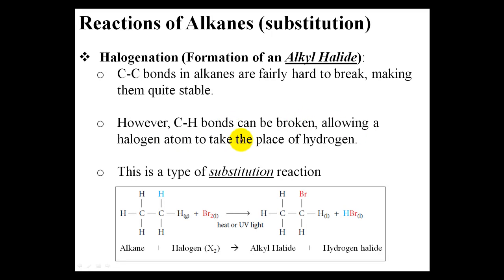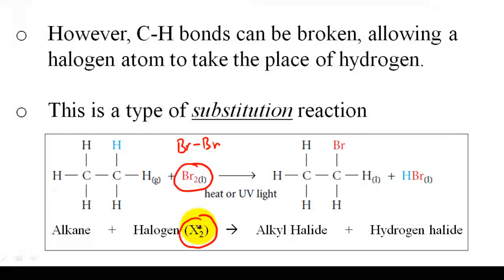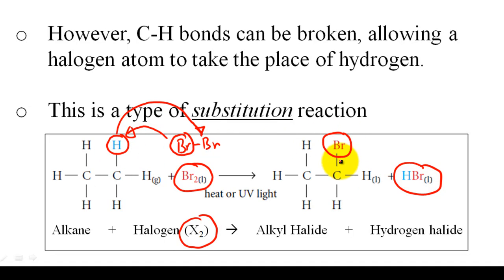In this case, we have a bromine molecule, symbolized as X2 where X is any halogen — bromine, fluorine, or chlorine, sometimes iodine. One of the bromine atoms substitutes for one of the hydrogens. That hydrogen bonds with the other bromine to form hydrobromic acid, or a hydrogen halide. In return, the bromine gets attached to that carbon, and we now have an alkyl halide — an alkane with a halogen attached to it.